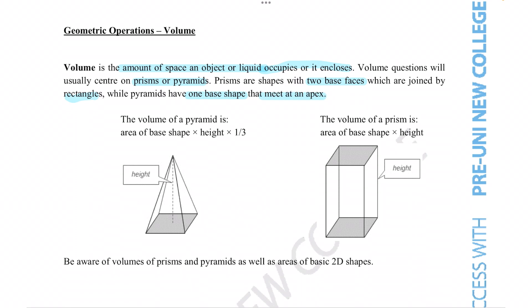We are told the volume of a pyramid and prism given in these two shapes here. It also says that we need to be aware of volumes of prisms and pyramids as well as areas of basic 2D shapes.